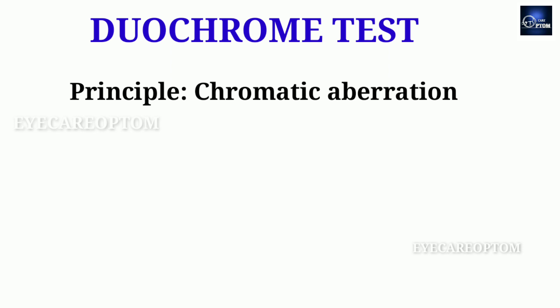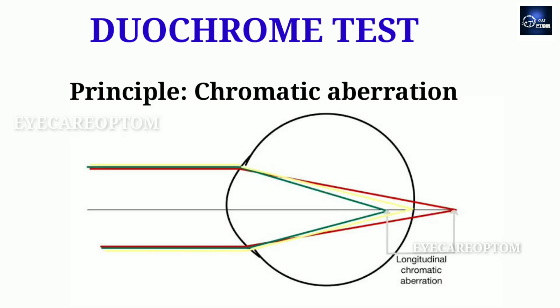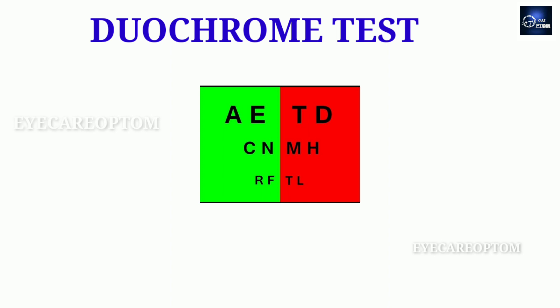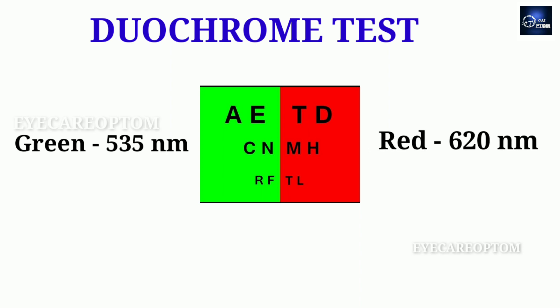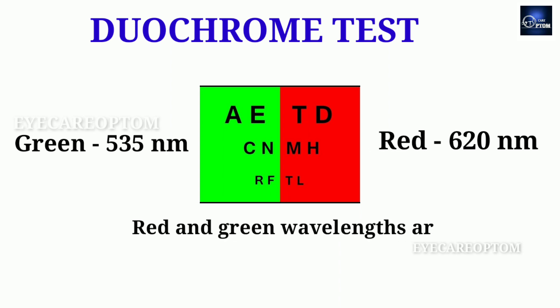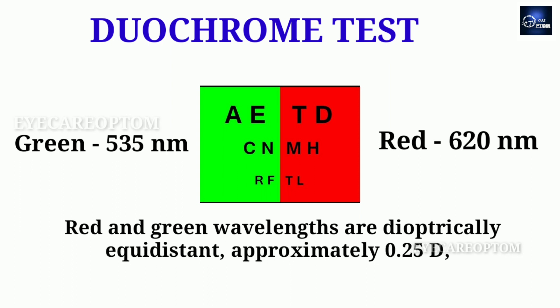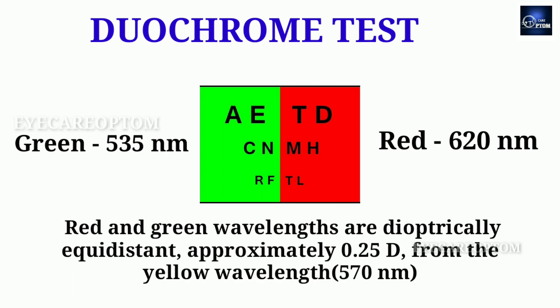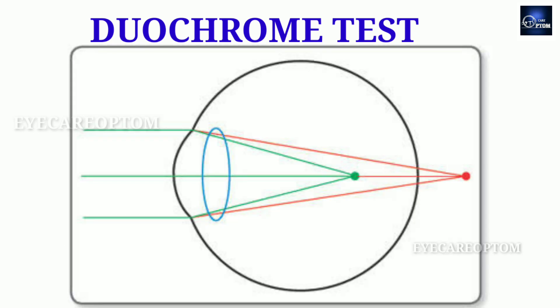The principle of this test is based on the chromatic aberration of the eye. Longer wavelength lights fall behind the retina and shorter wavelength lights fall in front of the retina. The Duochrome chart has green with a wavelength of 535 nanometers and red with a wavelength of 620 nanometers. The red and green wavelengths are dioptically equidistant — approximately 0.25 diopters from the yellow wavelength, which is 570 nanometers.